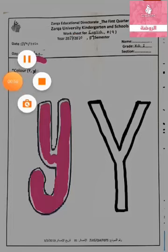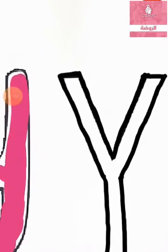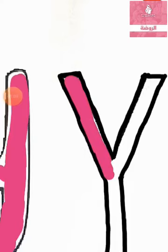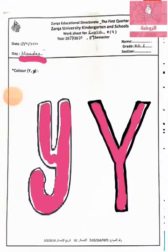And what's this? Yeah, capital Y. Let's color capital Y together. Capital Y. Did you finish? Well done KG.